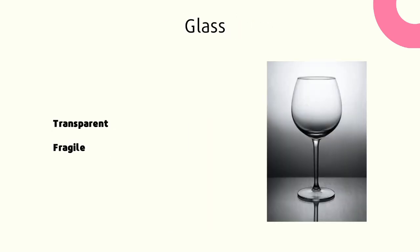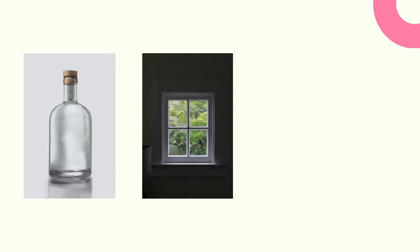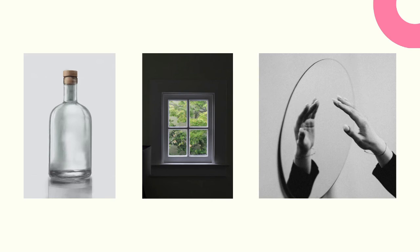And for the last material in this presentation: glass. Glass is transparent, so you can see through it, and fragile, meaning that it can be easily broken. Glass is used to manufacture bottles, windows, and mirrors.